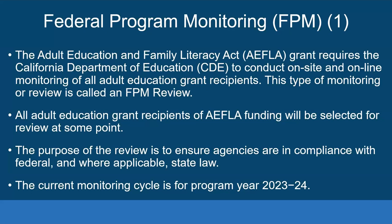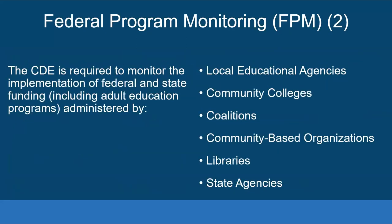Anyone who receives federal funding for AFLA at some point will be scheduled for an FPM review. The purpose of the review is to ensure agencies are in compliance with federal and, where applicable, state law. The current monitoring cycle is for program year 2023-24. CDE is required to monitor the implementation of federal and state funding. Agencies who receive AFLA funding include local education agencies or K-12 school districts, community colleges, coalitions, community-based organizations or CBOs, libraries, and other state agencies.